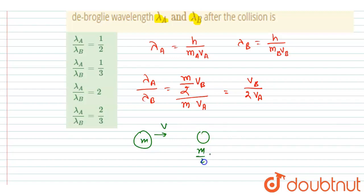And after collision the two start moving, the velocity of B was vB and this was having a velocity vA. Masses are m and m/2. So let's apply the momentum conservation first.